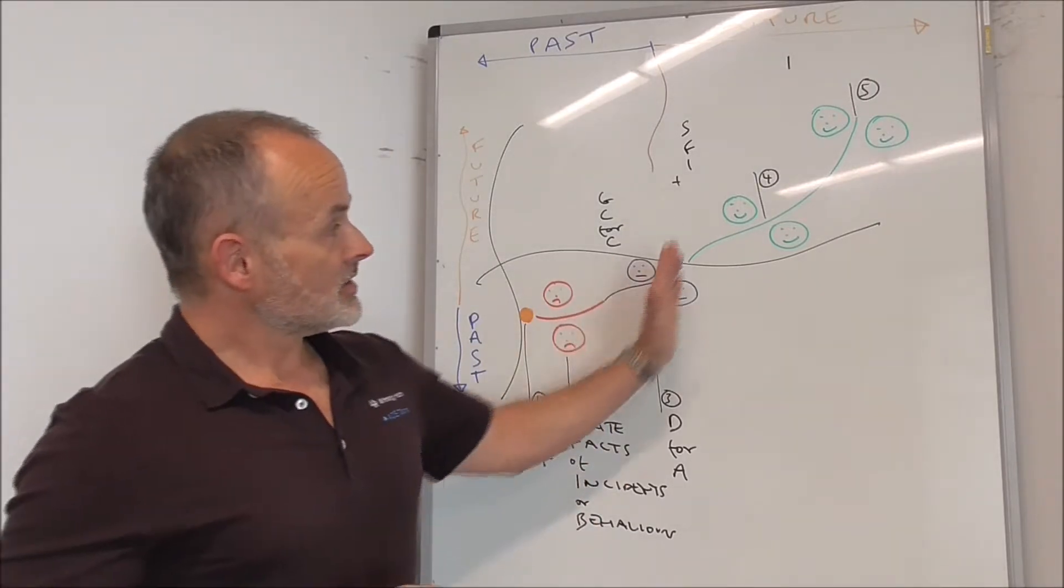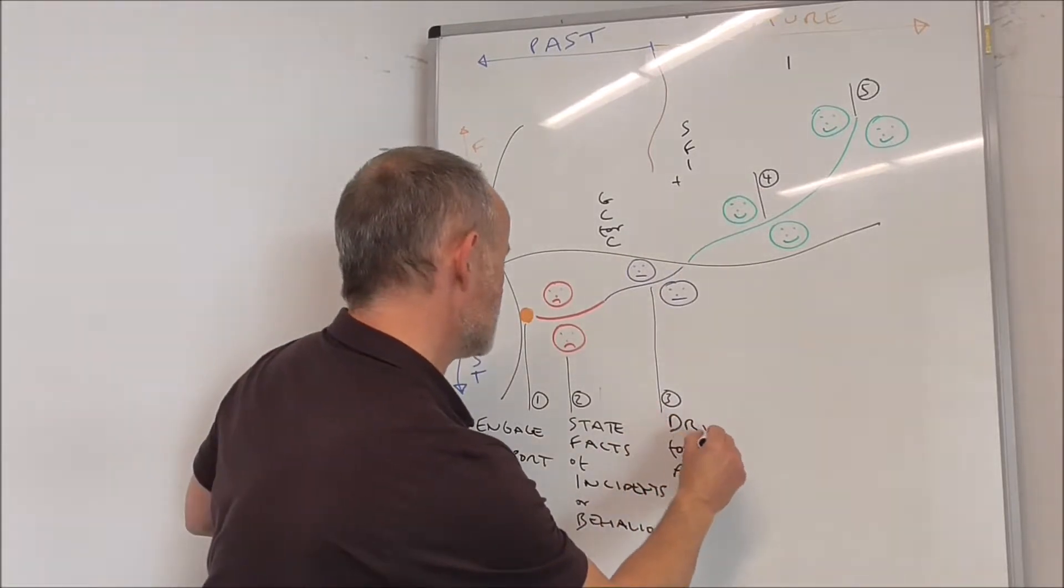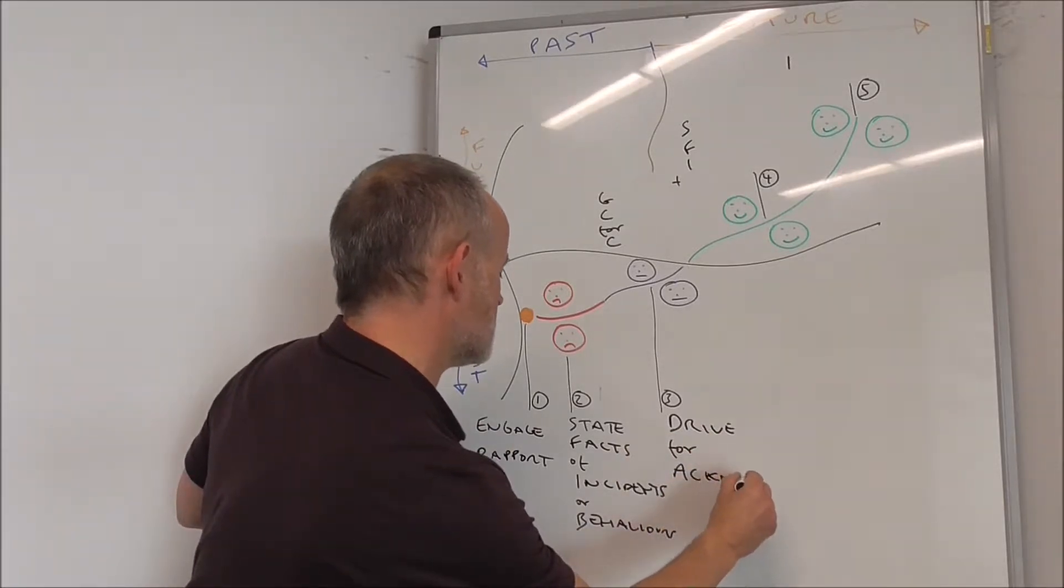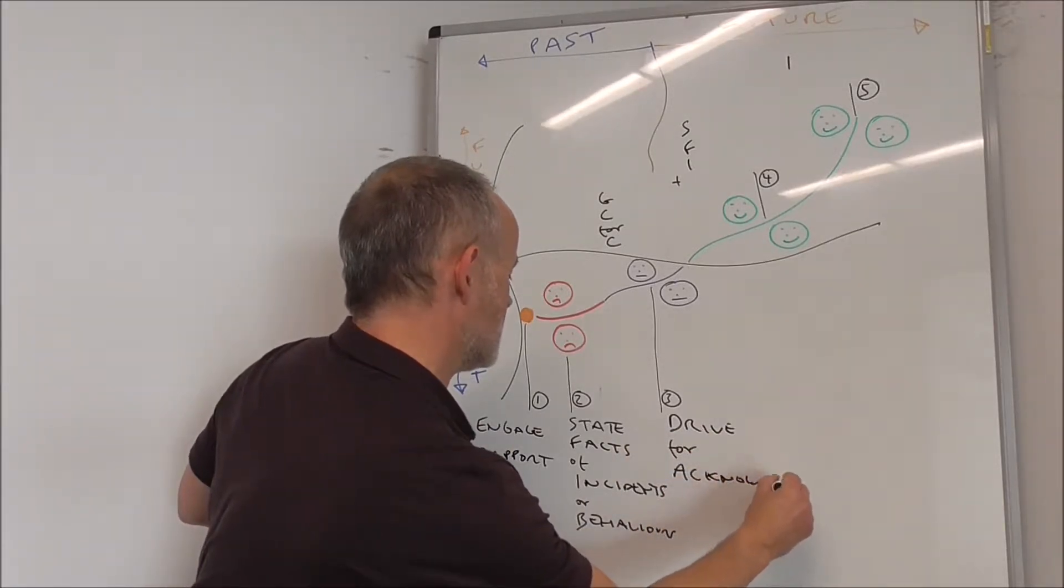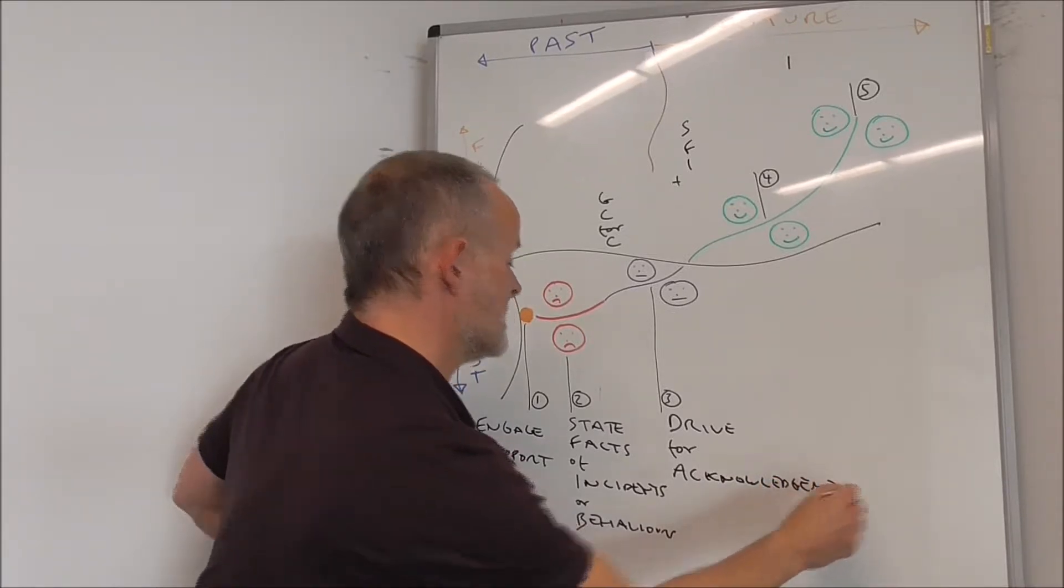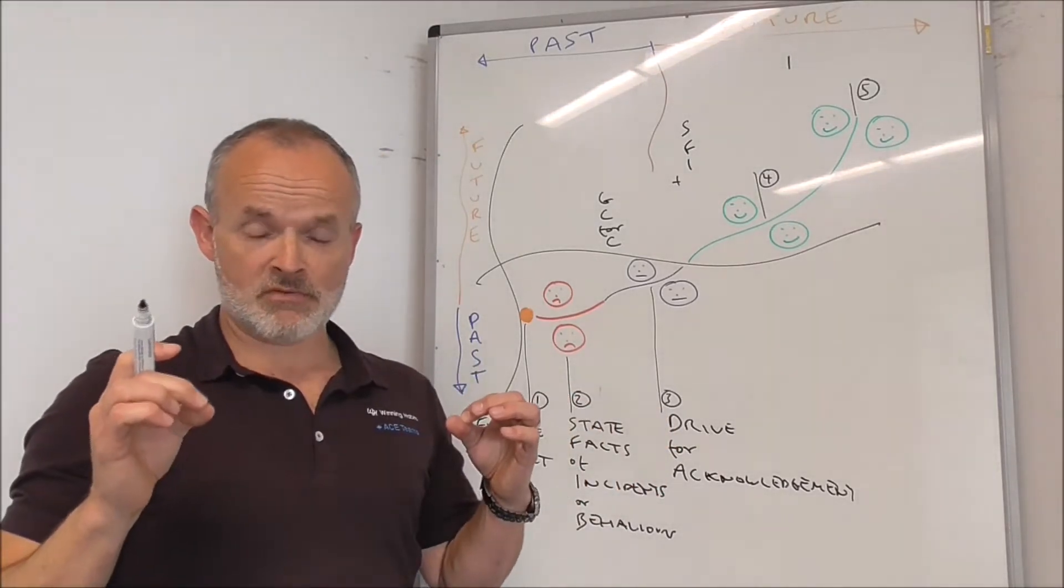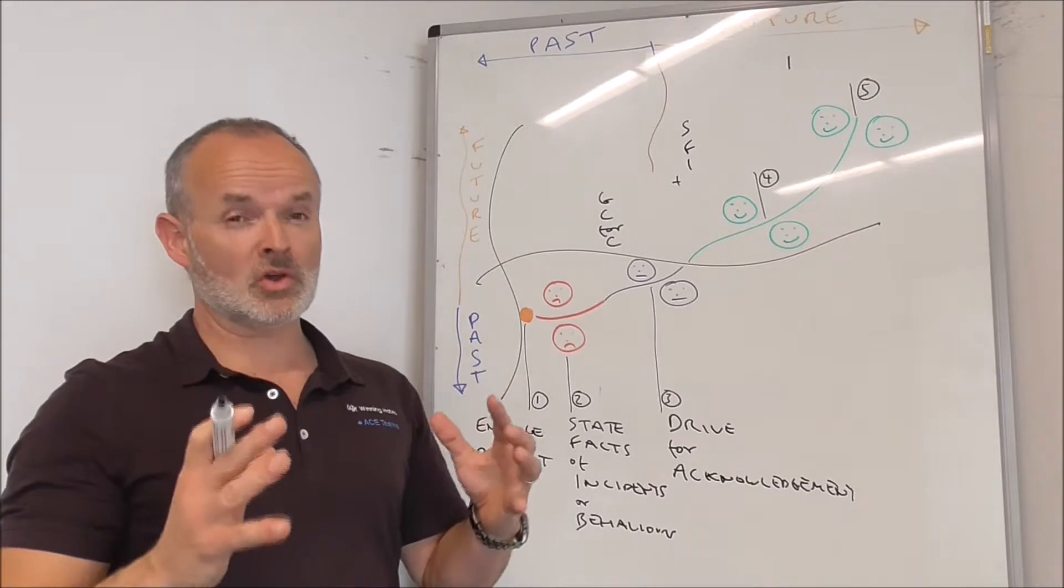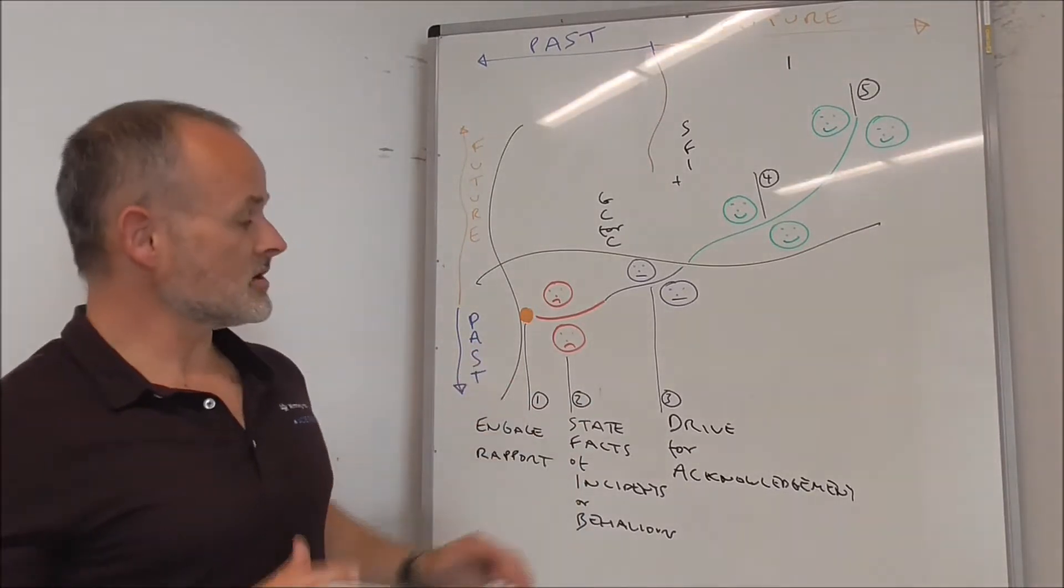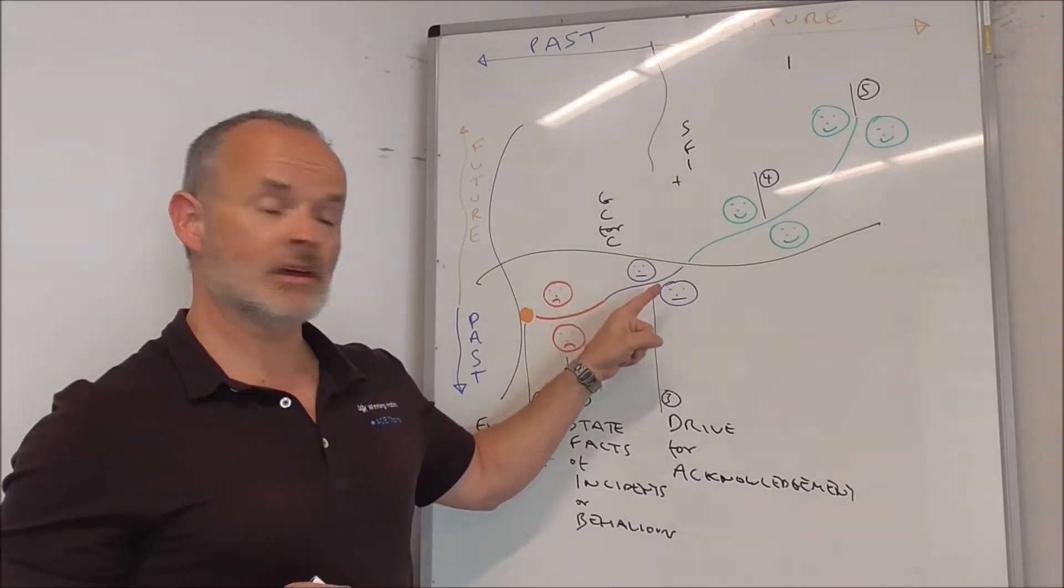Now, next step three, absolutely critical. If we don't have this, nothing's going to happen downstream. We must Drive for the Acknowledgement. What does that mean? You've got two parties sitting opposite each other. We must deploy a sense of empathy to concur and acknowledge the damage or the harm done by the incidents or the behavior.